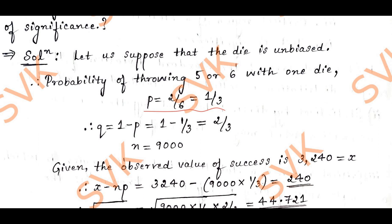Let us suppose that the die is unbiased. Therefore, the probability of throwing 5 or 6 with one die is p equal to 2/6, which equals 1/3. Once we have the value of p, we find q equal to 1 minus p, giving q equal to 2/3. Given n equal to 9,000.